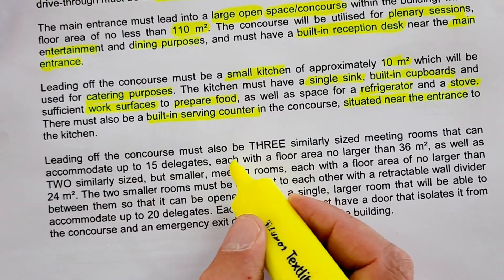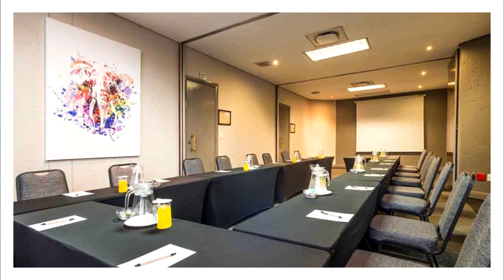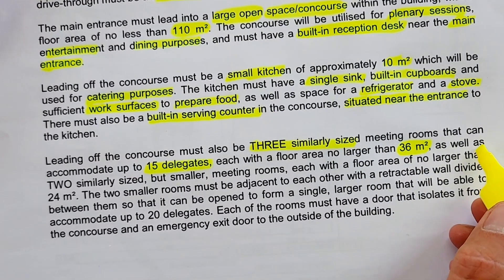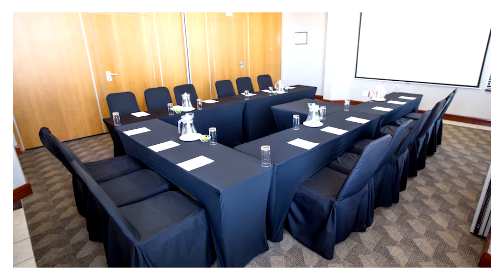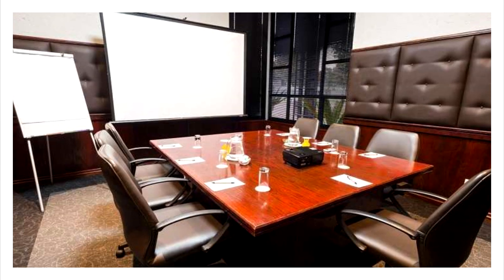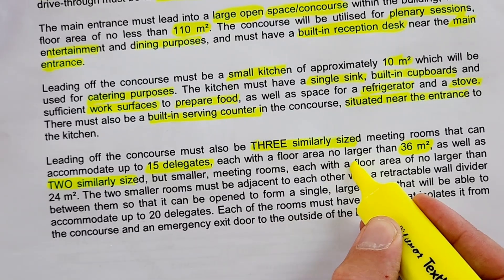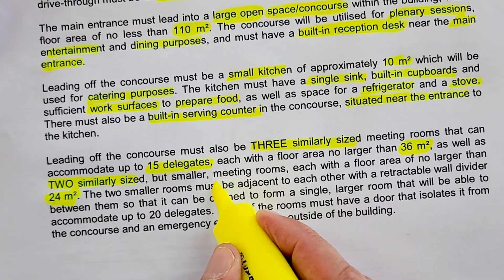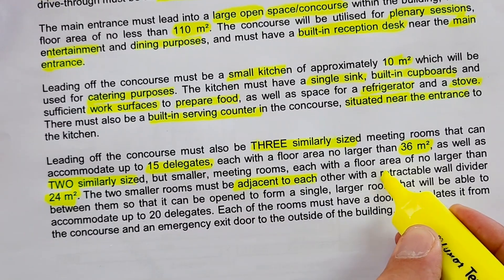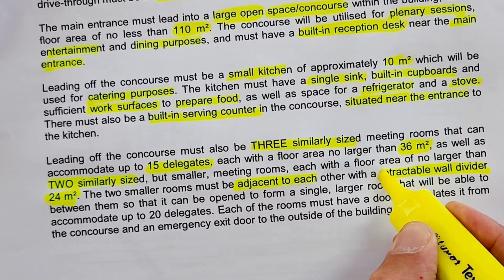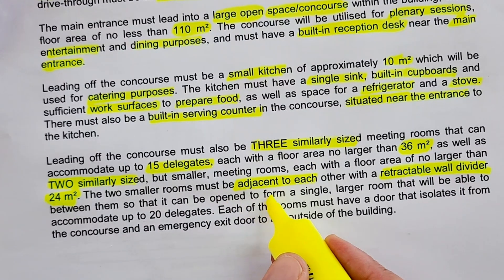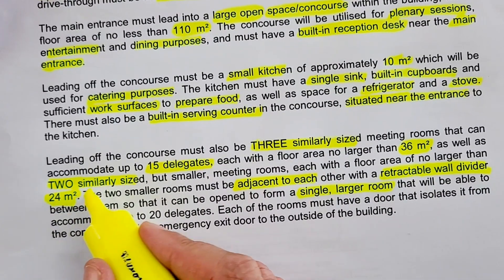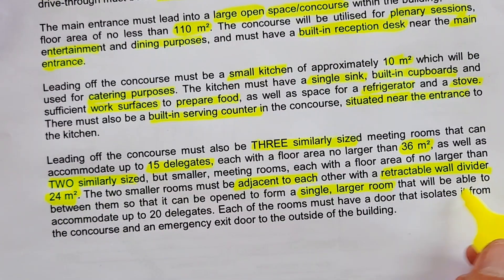Leading off the concourse must also be three similarly sized meeting rooms that can accommodate up to 15 delegates each, with a floor area of no larger than 36 square meters. There must also be two smaller meeting rooms each of floor area no larger than 24 square meters. The two smaller rooms must be adjacent to each other with a retractable wall divider — like a stacking or folding door — between them so they can be opened to form a single larger room.